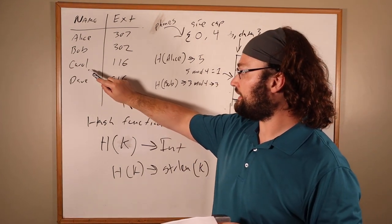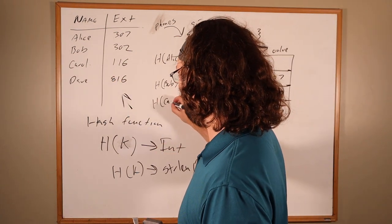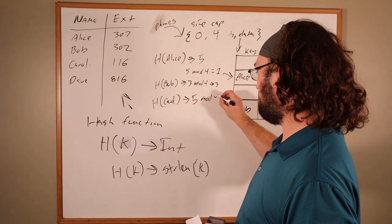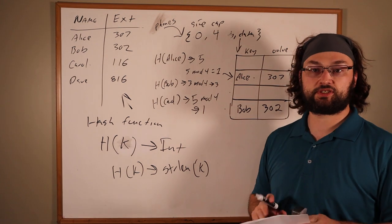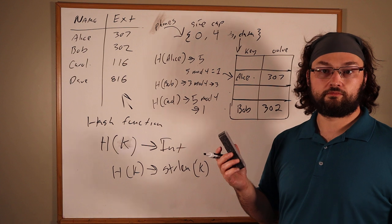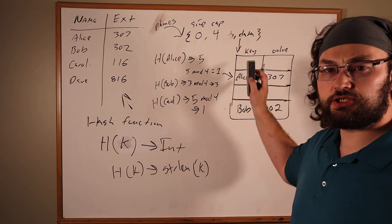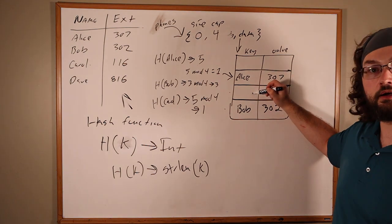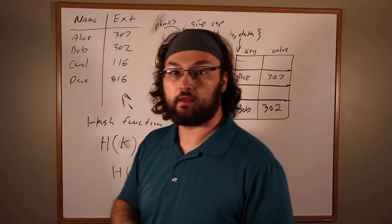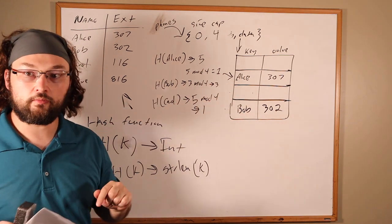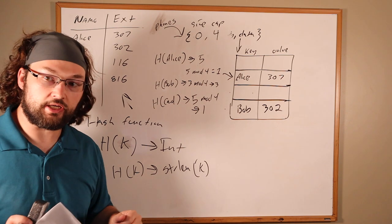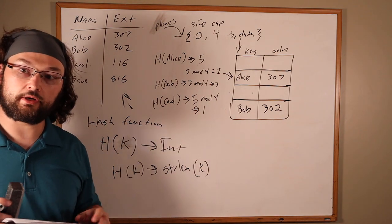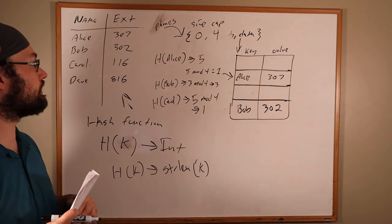Let's keep trying to do our insertion. Next we'll insert Carol. H of Carol is 5, which mod 4 is 1. So Carol also wants into the Alice slot. Let's go ahead and do it the way where we're going to probe forward. What we want to do is insert it into the next slot in the table, which is here, because then we can do lookups by comparing Alice to Carol. But we don't want to fill up the whole table. Instead of actually doing our insertion here, we're first going to allocate a new larger table so we don't fill up our table too much. We don't want a load factor in this style over 0.5.